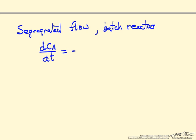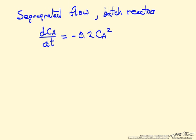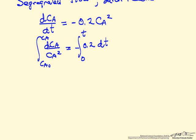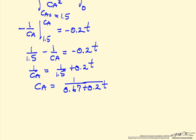The rate constant is 0.2, and the concentration of A makes this a fairly standard calculation. We can separate variables and integrate from 0 to some time T, which corresponds to an outlet concentration CA, starting from CA0. Substituting in CA0 = 1.5 moles per liter and simplifying, the integration with those limits gives the concentration of A as a function of time in this batch reactor.